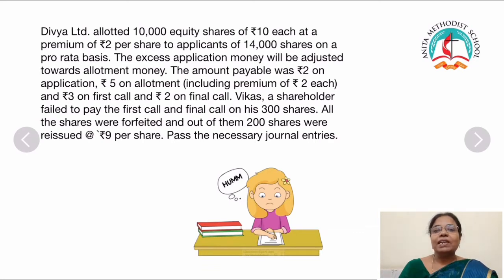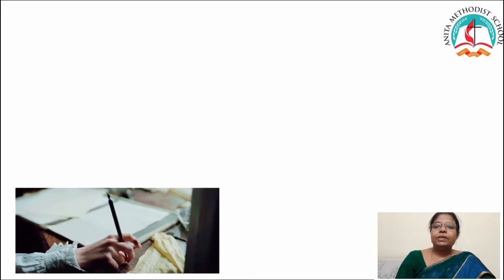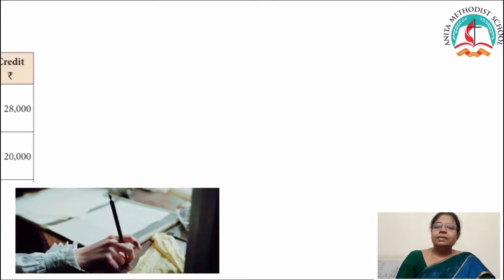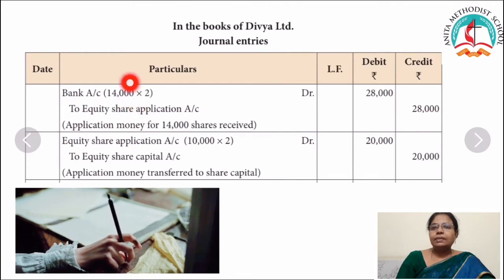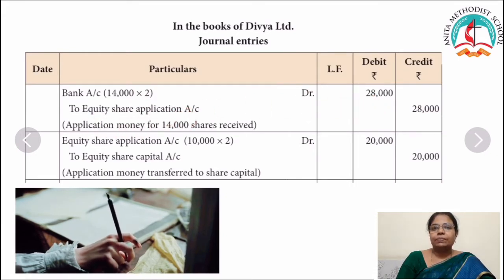Okay children, shall we record the journal entries? The first step, you have to write the format: date, particulars, ledger folio, debit, credit. The first journal entry is for receiving the applications. Bank account debit — how much are they receiving on applications? 14,000 at the rate of rupees 2, that is 28,000 — to equity share application account. Application money for 14,000 shares received.